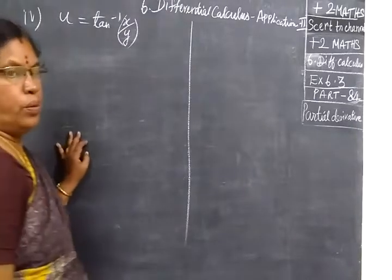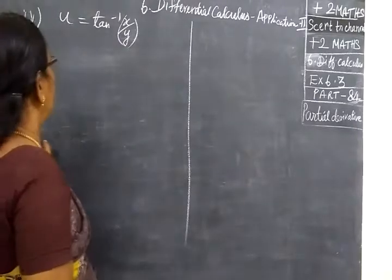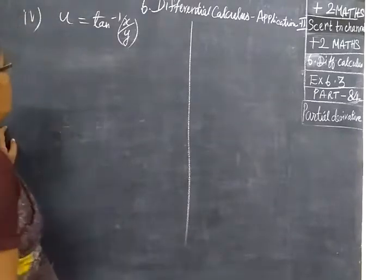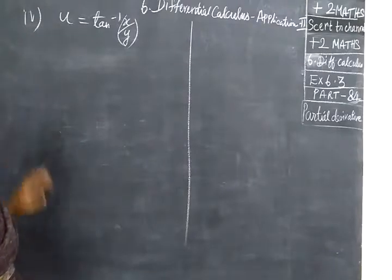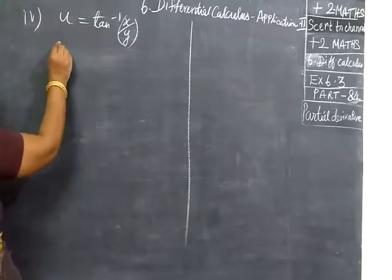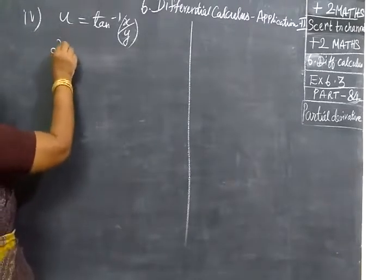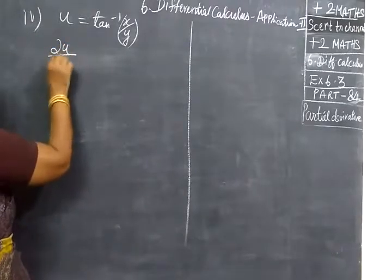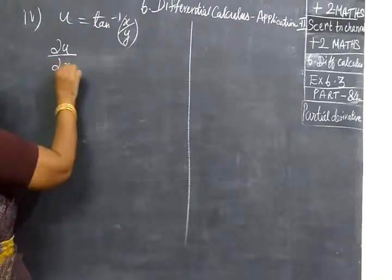Now we do part 84. For u equal to tan inverse of x by y, find ∂u/∂n.